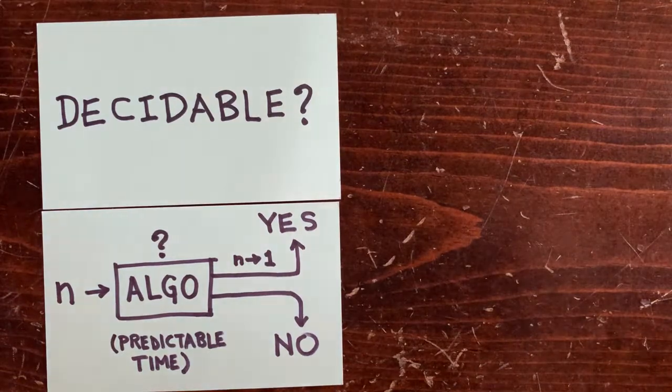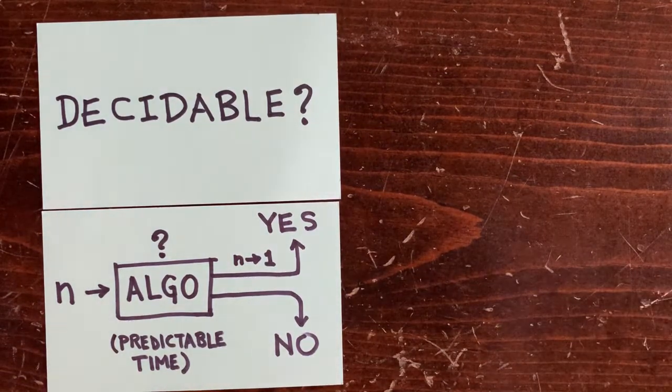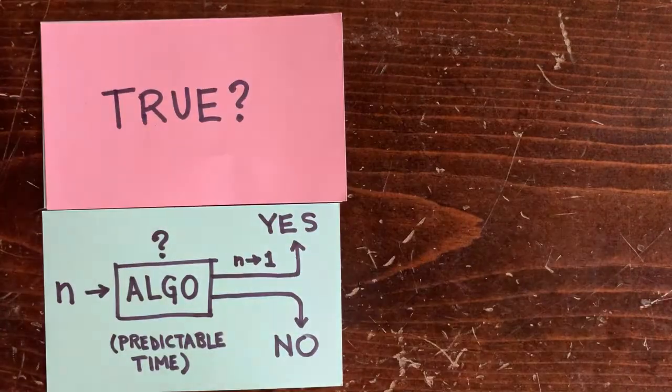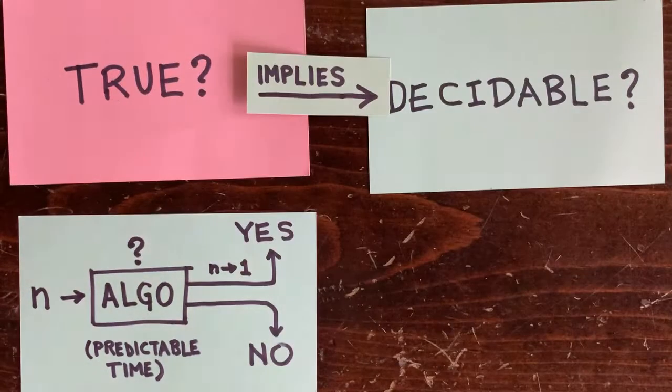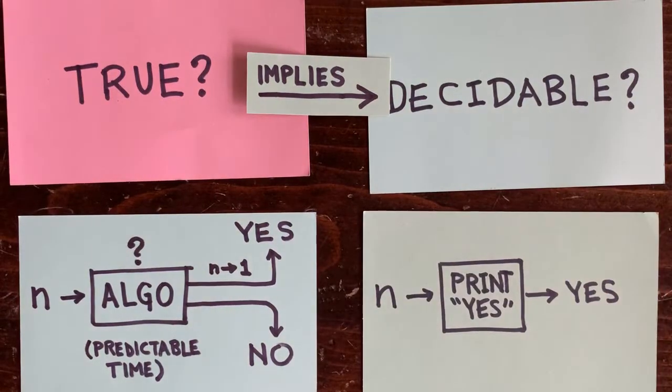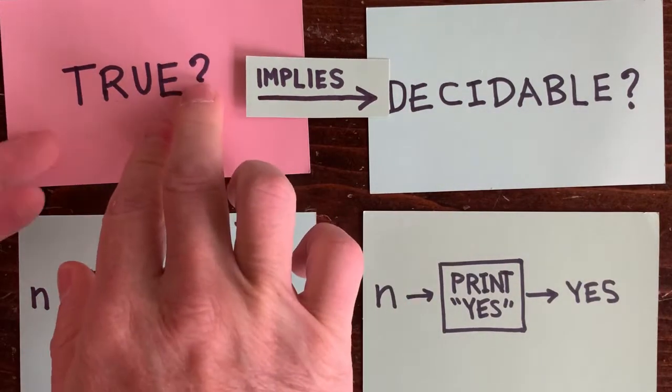But let's see if we can reason a little bit about it. So if the 3N plus 1 conjecture is true, then this is decidable because there's an algorithm that's just accept input n and print out yes. Likewise, if it's undecidable, then it's false. But what if the 3N plus 1 conjecture is false?